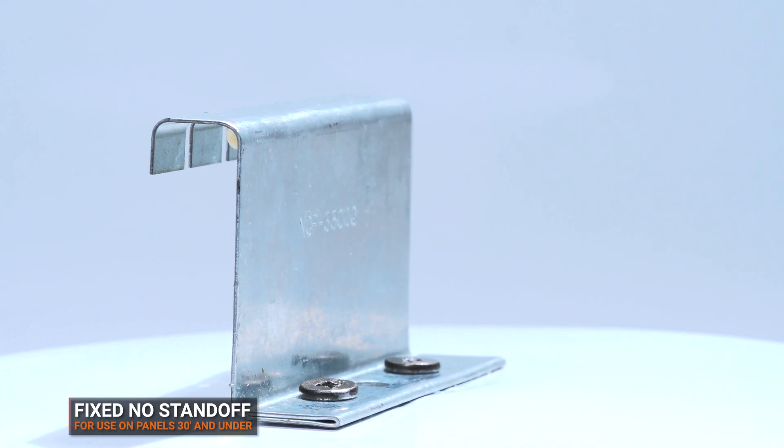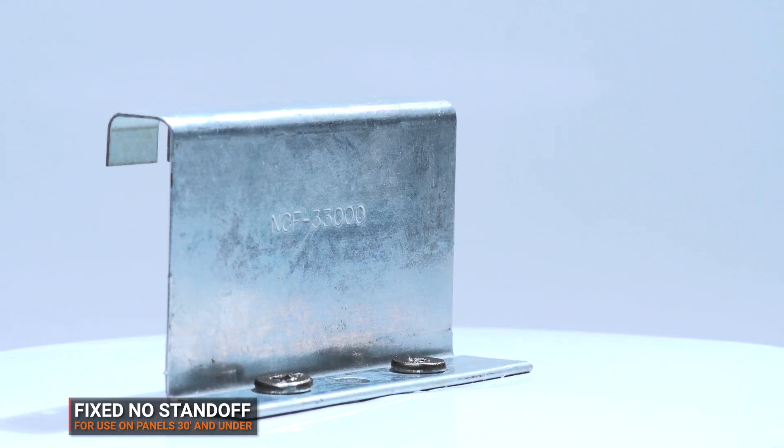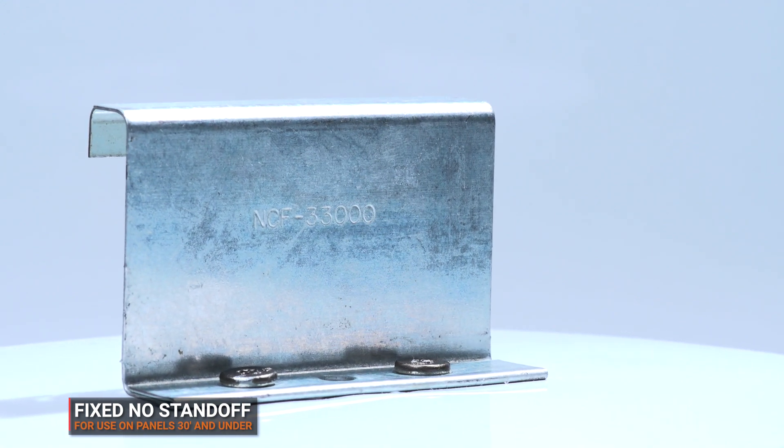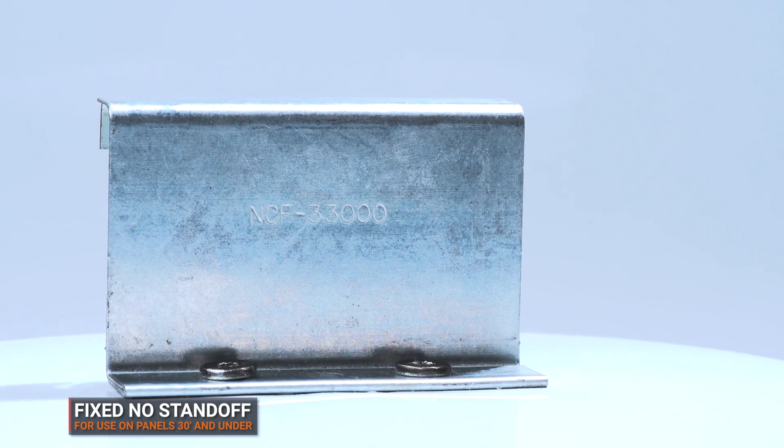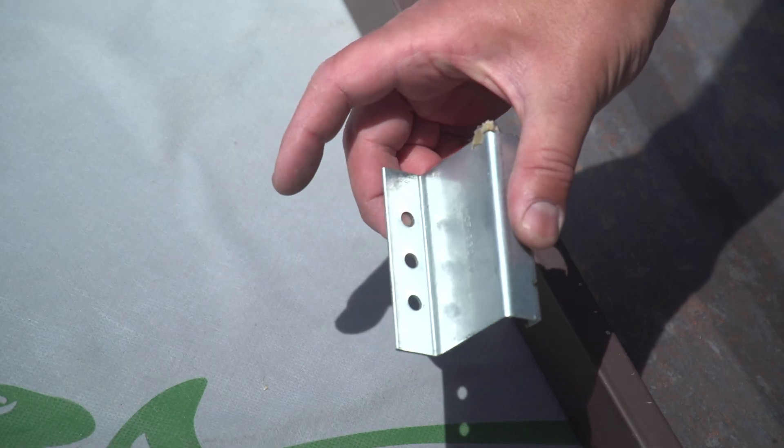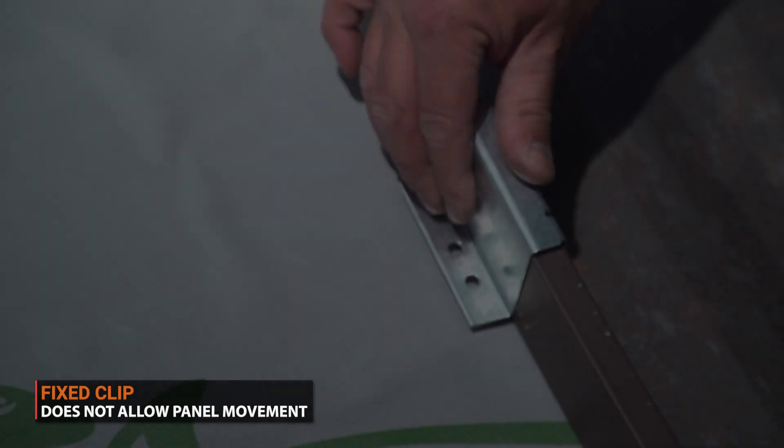Fixed clips get their name from being fixed in place once they are installed. They are a one-piece clip that attaches to the leg of the panel and then fastened directly to the substrate. They do not allow movement for expansion and contraction.